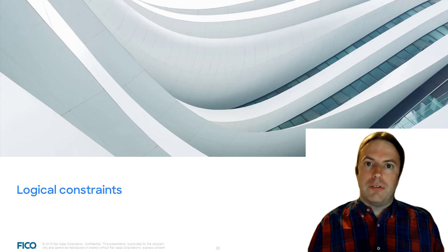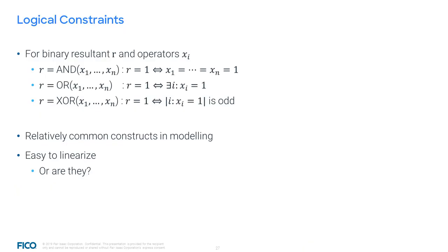Let's now continue with some information on special kinds of constraints. We start with logical constraints. A logical constraint is any logical connection of binary variables of the form AND, OR, or XOR. The binary resultant of an AND constraint is 1, or true, if and only if all the variables are 1. In an OR constraint, the resultant is 1 if and only if at least one variable equals 1. An XOR constraint is true if and only if the number of true variables is odd. These constructs are often useful in modeling.